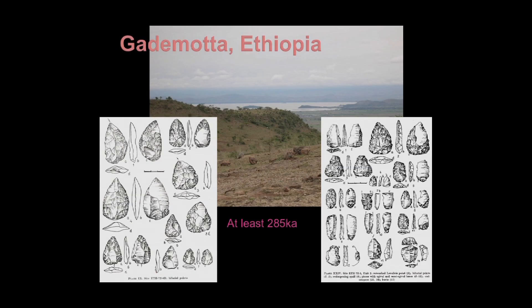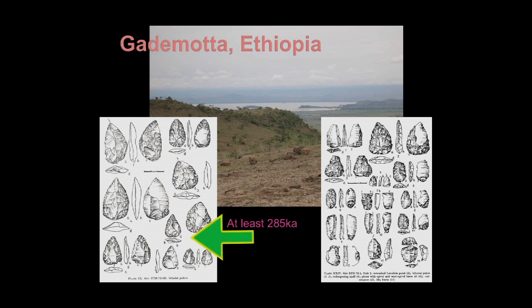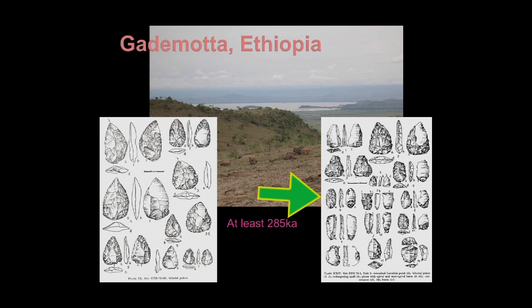This is a very early sequence from Gadimata in Ethiopia, where we have some very small points trimmed at the base for hafting. This very flat, invasive working into a perfect symmetrical shape is characteristic of the East African material. We also have blade-like forms, but very small, with retouched bases — we don't quite understand what those are for.